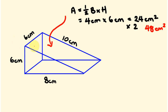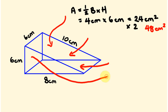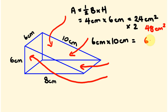We have three rectangles to work out. First, this diagonally shaped rectangle — the area is length times width, which is 6 centimeters by 10 centimeters, which equals 60 centimeters squared.